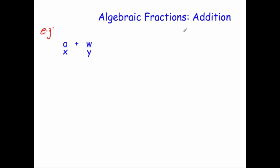Let's look at a numerical example to get the technique. If we had 1/5 plus 2/3, to add those together you need to get a common denominator. An easy way to do that is to multiply the top and bottom of the first fraction by the denominator of the other one. So we times both of these by 3 to get 3/15, and times both of these by 5 to get 10/15. As you can see, both denominators are the same, then you can just add them to get 13/15.